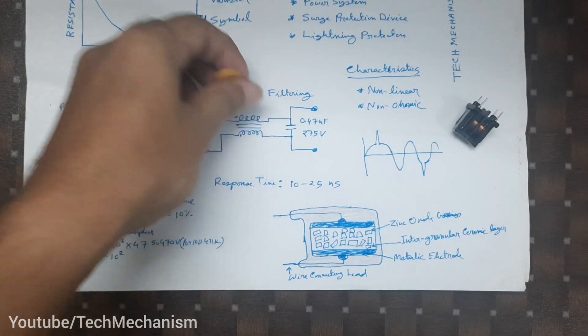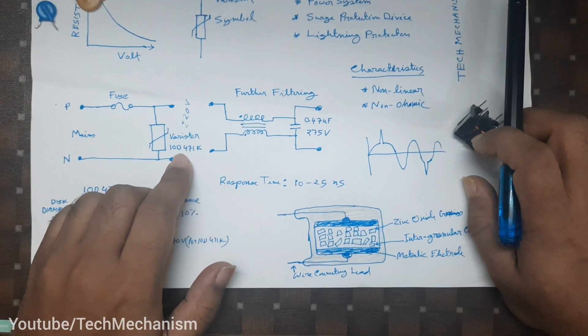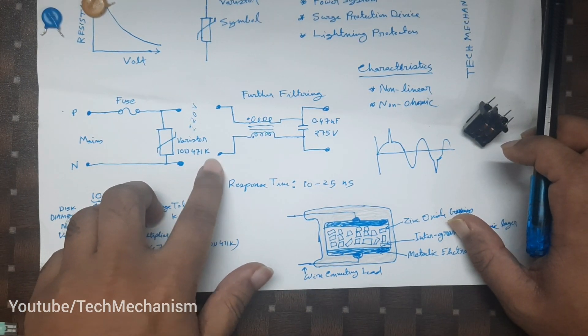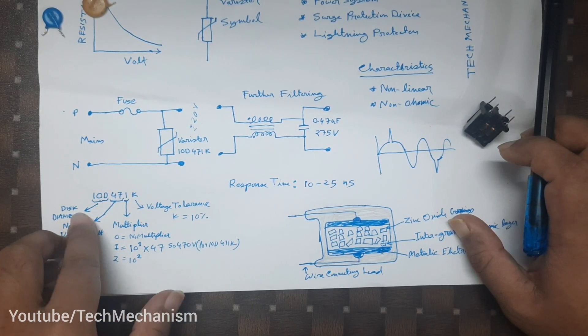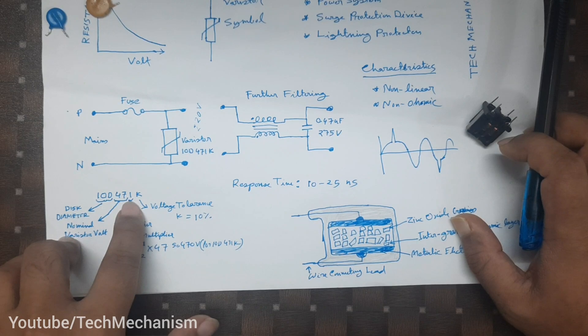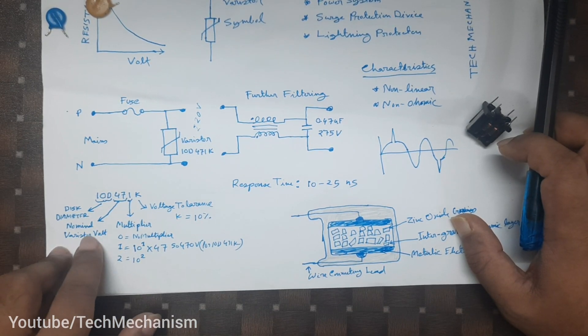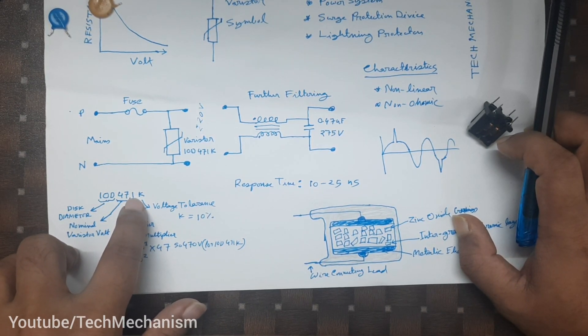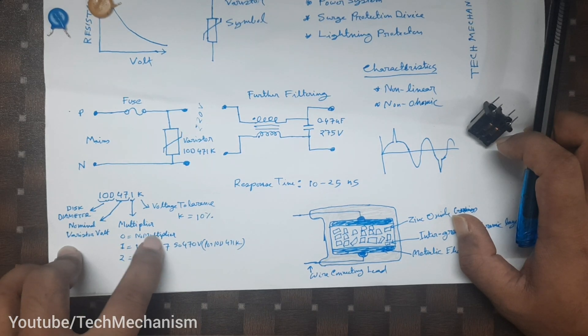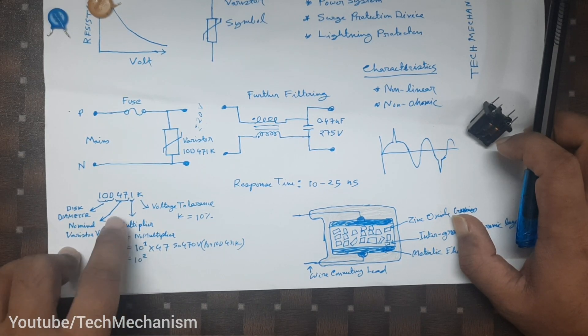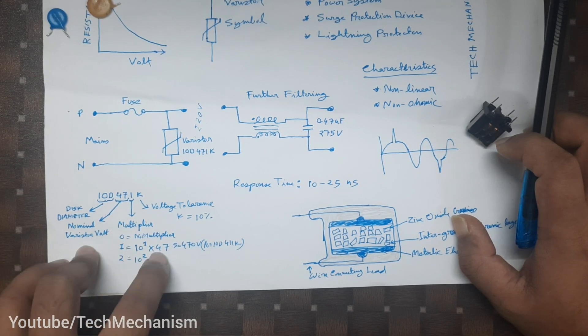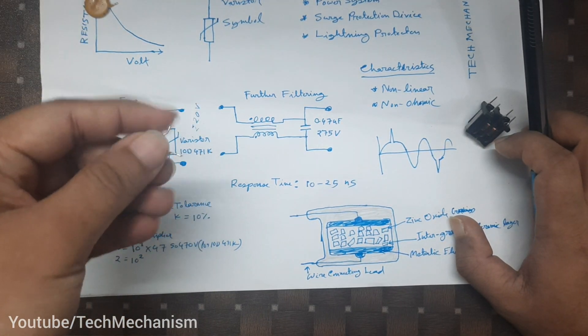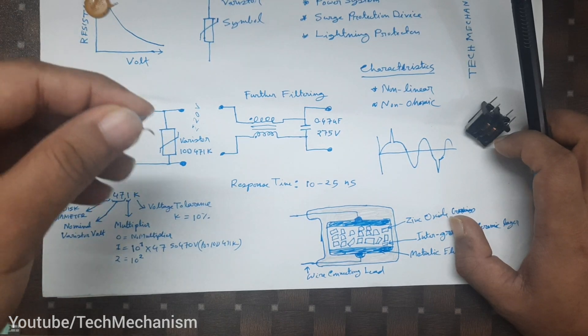The model of the varistor that we are using is 10D471K. Now we will see what 10D471K means. Here, 10D means this diameter, that means 10 millimeters. And 47 is just nominal varistor voltage, but it is not the real voltage. If you have to find its threshold voltage, you have to take this number, the third number. The third number is a multiplier. If 0, no multiplier. If 1, 10 to the power 1. If we multiply 47 with 10 to the power 1, we will find 470 volts. This varistor will short circuit itself if the voltage is above 470 volts. We have to keep that in mind.